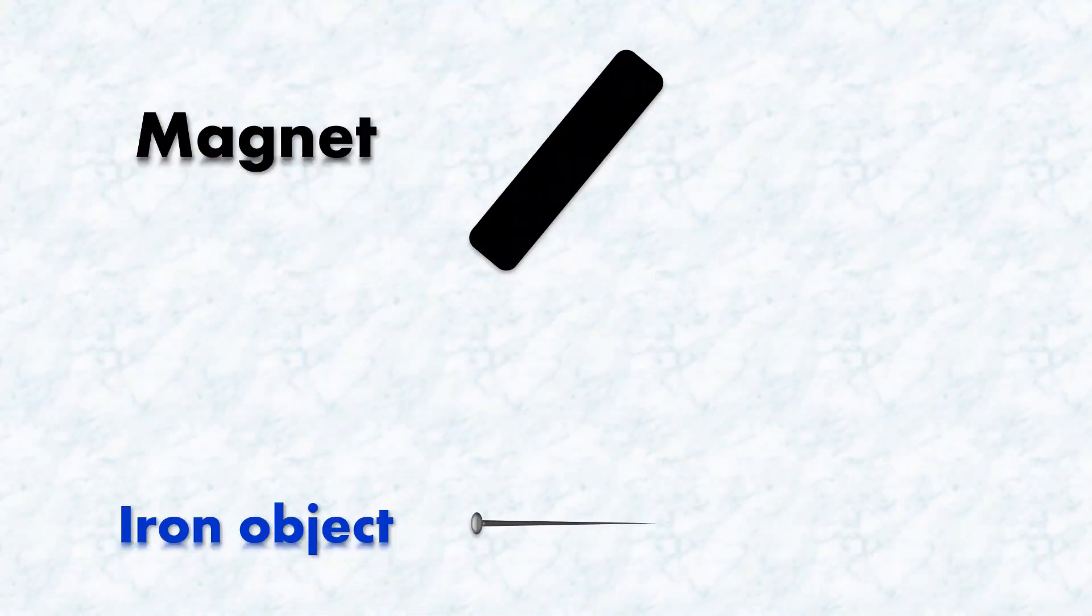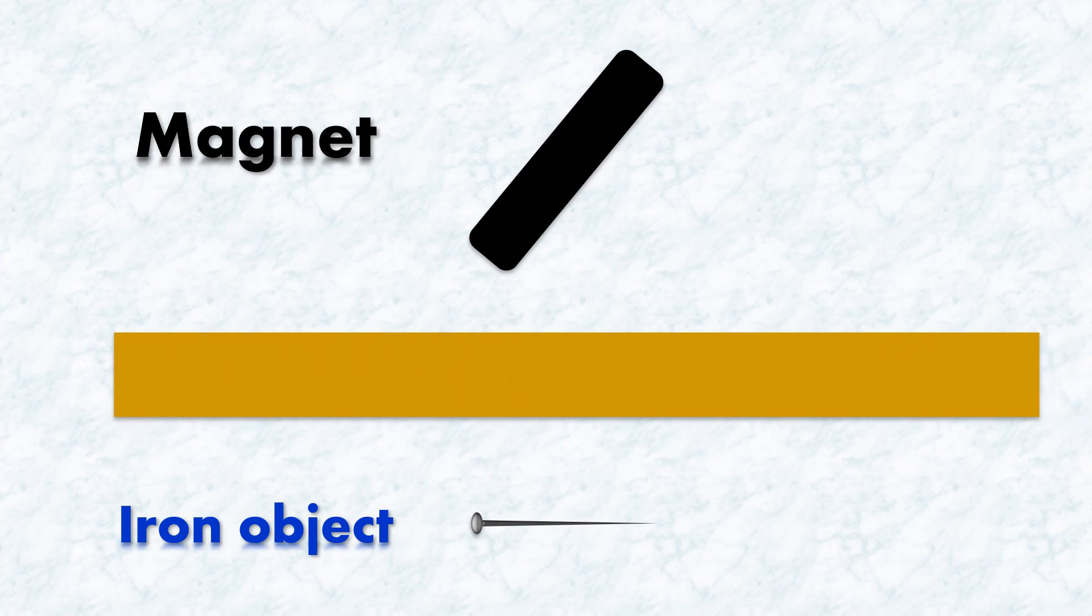Imagine a magnet and an iron object like a needle. And you know that when we place the needle at a certain distance, the magnet will attract the needle. Now, place a thick cardboard between them. What do you think will happen?